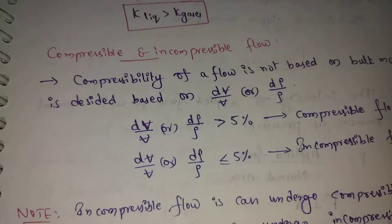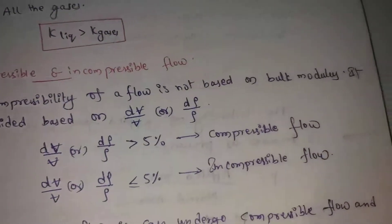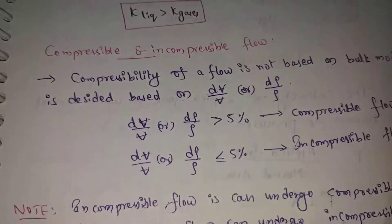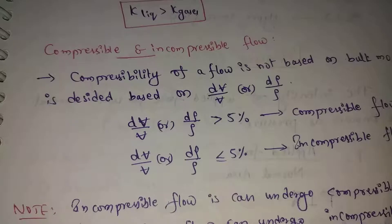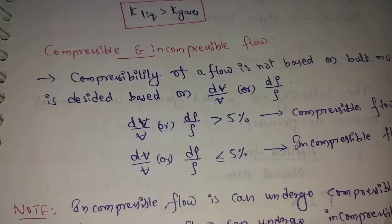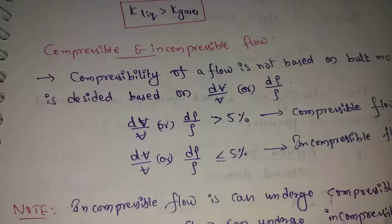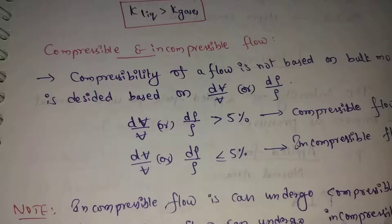Compressibility of a flow is not based on bulk modulus alone. Compressibility is decided based on dv/v or dρ/ρ — that is, the change in volume or change in density based on compressibility, and how these properties act on flows.